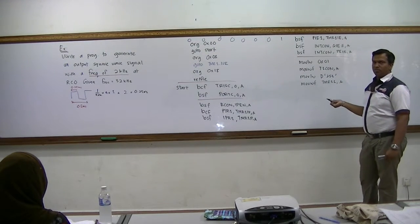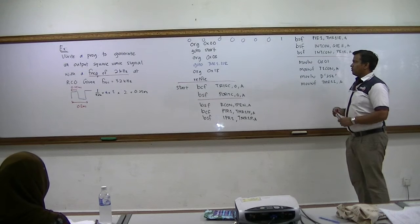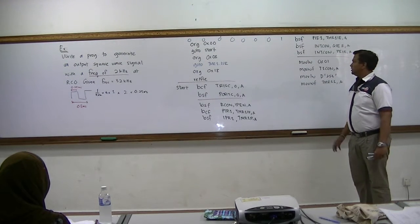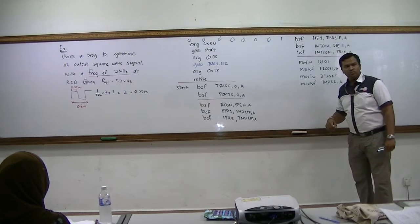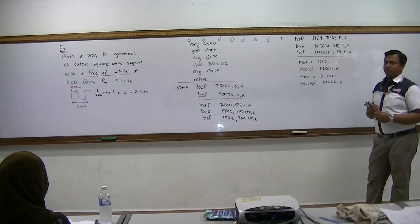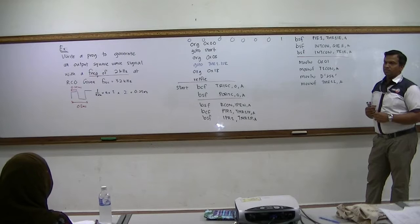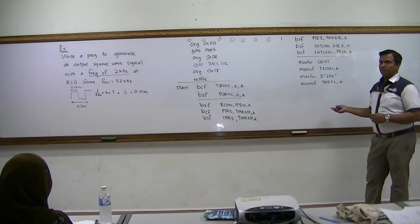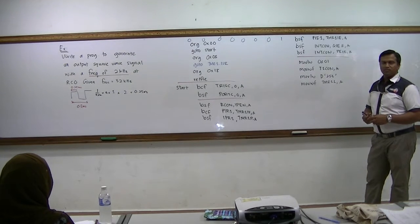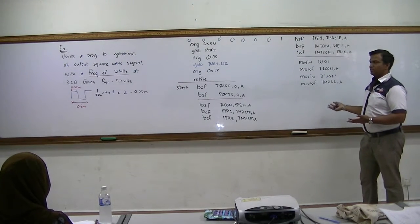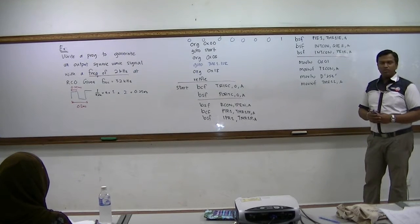So we just load — 255 minus 2 — move the value decimal 253, and we move it to Timer 1 Load. This is sufficient. So now you have loaded the value. Because 0.25 means it's actually very fast, extremely fast. So after you have loaded the value, what do you want to do? You have loaded the value already, so you will start counting. It's only two steps left.